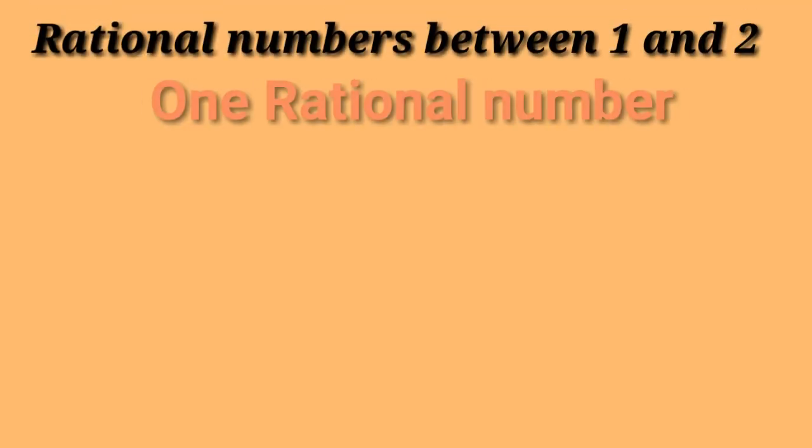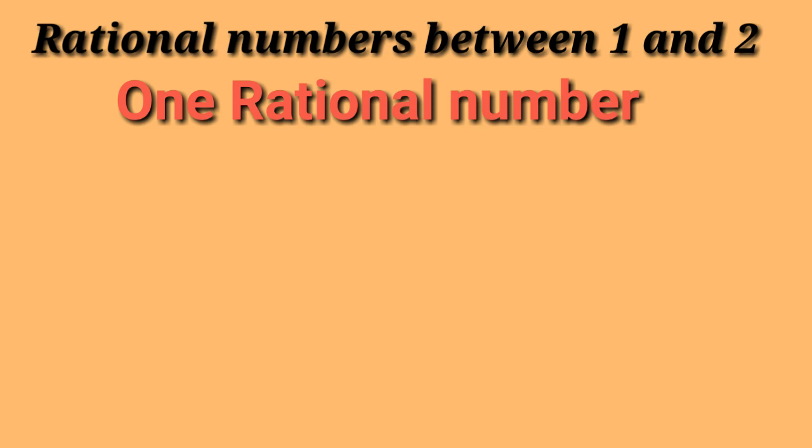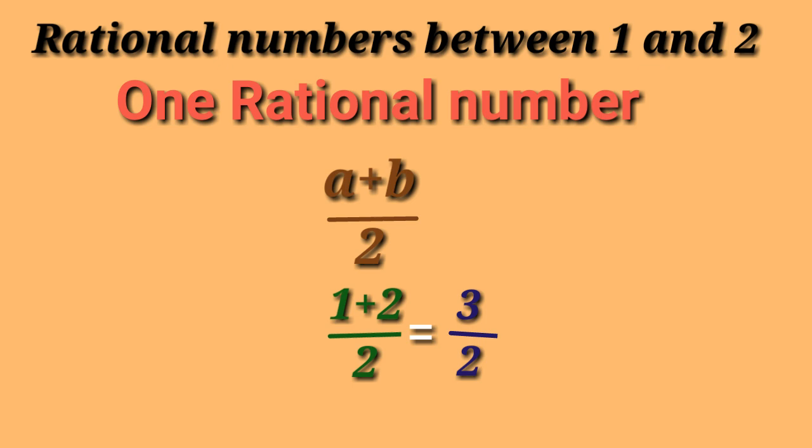If we want to find one number between 1 and 2, there is one way: making average. A plus B by 2 equals 1 plus 2 by 2, that's equal to 3 by 2. 3 by 2 is one rational number between 1 and 2.